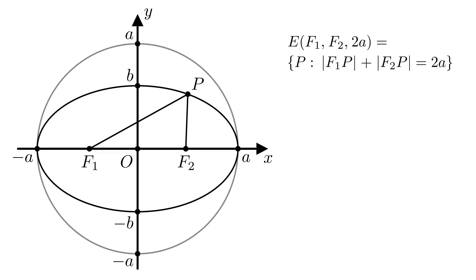In particular, that is also true when P is on the y-axis. In this case, |F1P| is equal to |F2P|, so each of them must be equal to a.